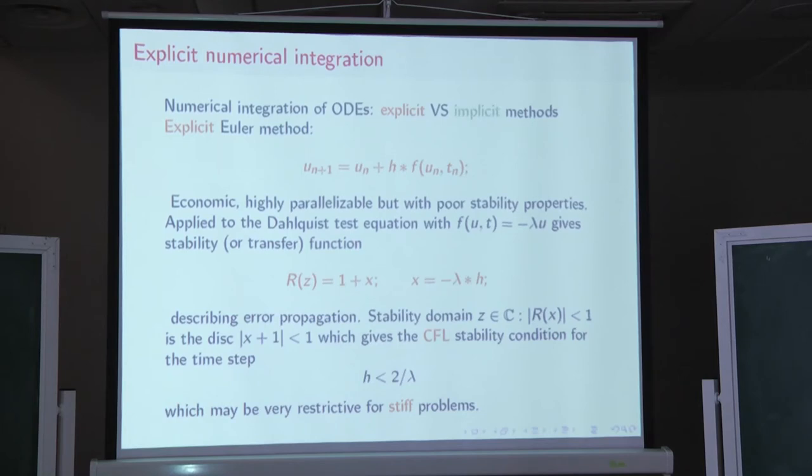And this gives us the transfer function, which is a linear polynomial, it's very simple, where its argument is related to lambda. Lambda is a parameter in Dahlquist equation, and H is the time step. The error propagation, that is, if we have some certain errors that we committed on certain step, then it will be multiplied by this function.